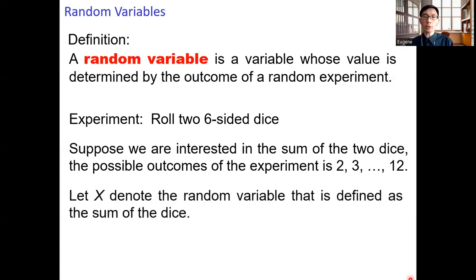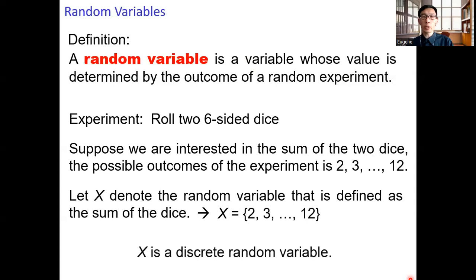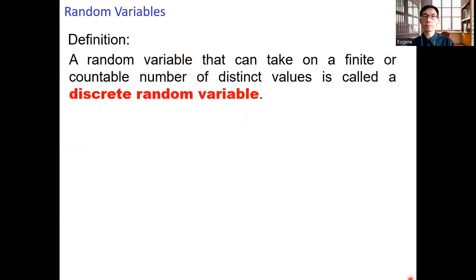Let X denote the random variable defined as the sum of the dice. Then X can take on values 2 through 12, and we call X a discrete random variable. A random variable that can take on a finite or countable number of distinct values is called a discrete random variable.